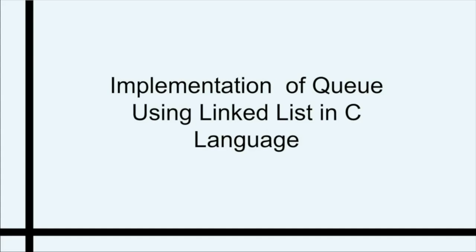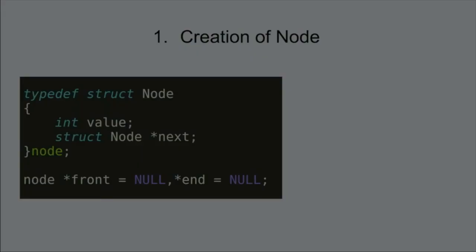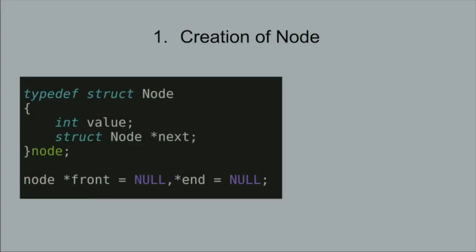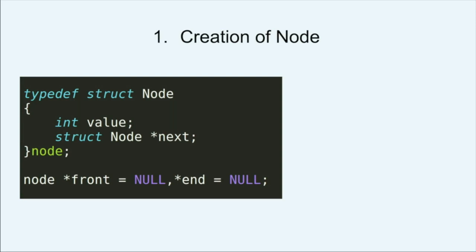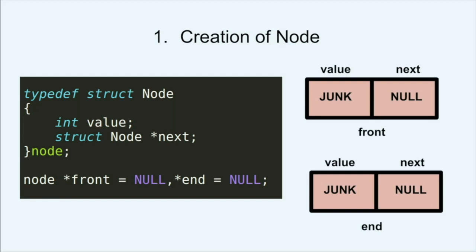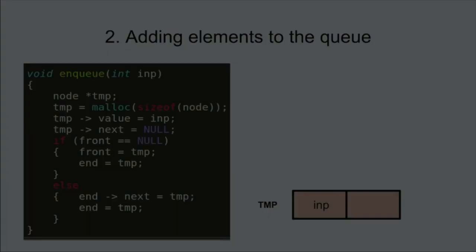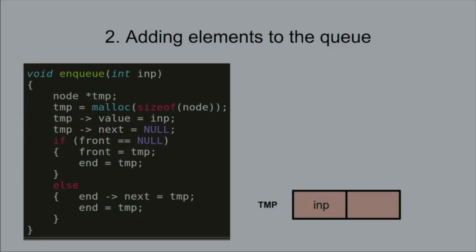Now we'll see the implementation of queue using linked list in C language. First we see the creation of a node. Similar to the stack, we create a structure which has two elements: one is the integer value it will hold, and the other is the pointer used to point to the next node. Here's how both front and end pointers will look on creation. These pointers will point to the front and the end of the queue respectively.